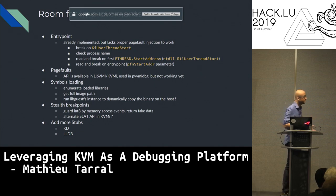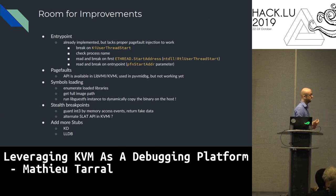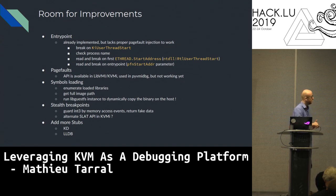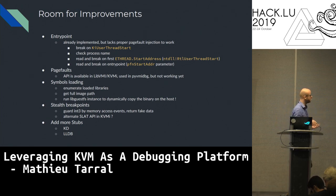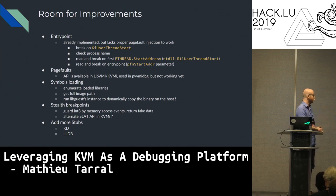There is of course room for improvement. I'm doing this in my free time, but I've already implemented the entry point logic to catch a process when it's being created. I'm missing proper page fault injection to reach those entry points and set breakpoints there, but the logic is implemented. For symbol loading, we can enumerate loaded libraries and use libguestfs to copy from guest to host dynamically, even while the VM is running. Stealth breakpoints are not yet implemented — it's just raw int3. But we can guard breakpoints with memory access events, and when PatchGuard reads our breakpoints we can skip and return fake data, or use the alternate EPT API in KVMI. And of course, add more stubs: LLDB, KD.